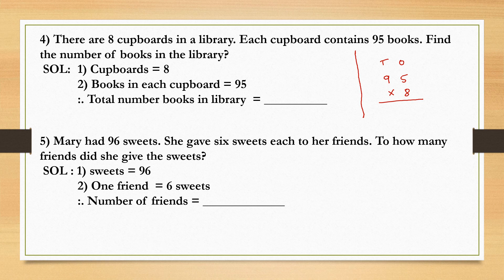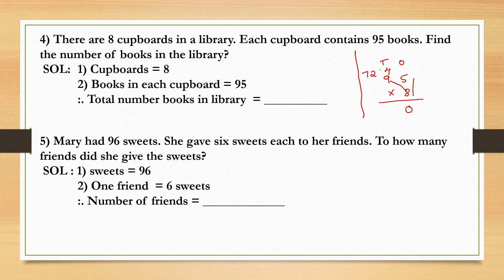Eight times five is 40. So tell the table of eight. Eight times nine is seventy-two. Seventy-two plus four is seventy-six. So total number of books in library equals to 760 books.